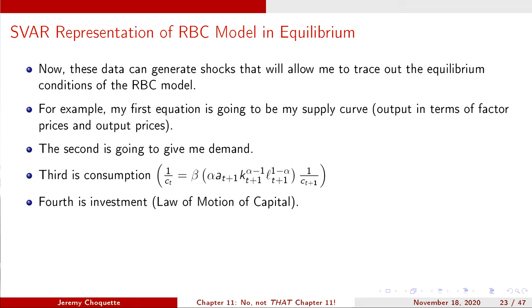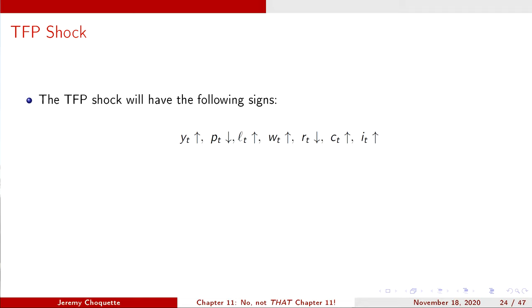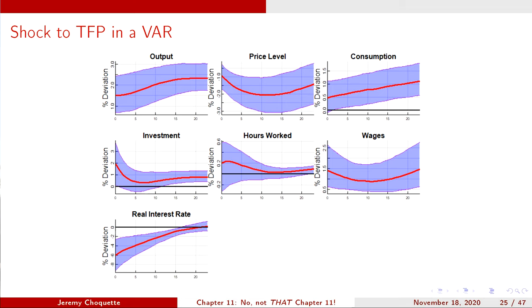The data put into a VAR generates shocks that allow me to trace out equilibrium conditions and test against the RBC model. The first equation gives the supply curve, the second gives demand, third consumption, fourth investment and the law of motion of capital, fifth labor supply, sixth labor demand, and seventh the Euler equation for bonds. The TFP shock sign restrictions are: output goes up, prices fall, hours worked increase — triggering a shift in the production function leading to aggregate supply and a labor demand shock. I plot these responses for 24 quarters.